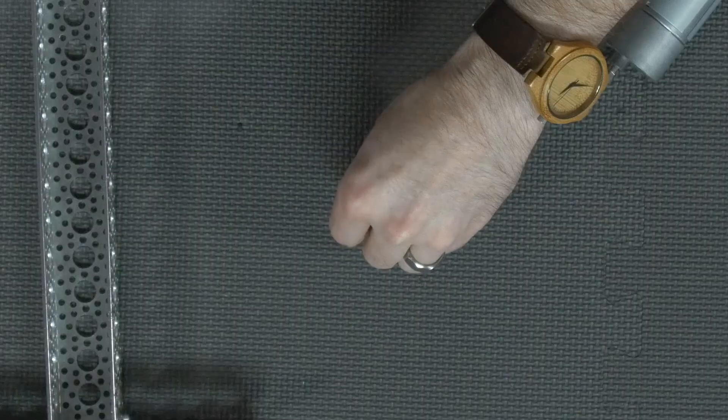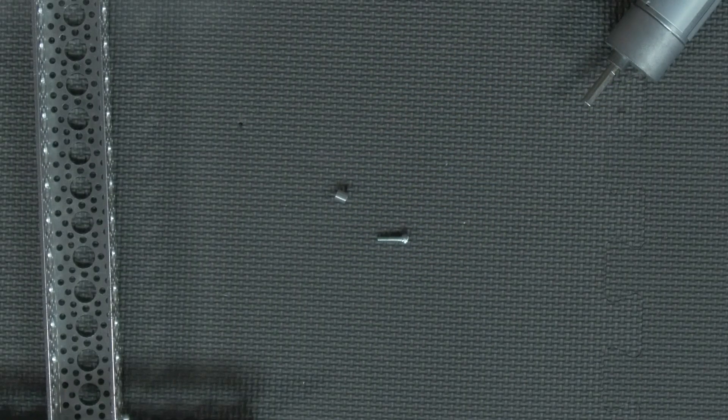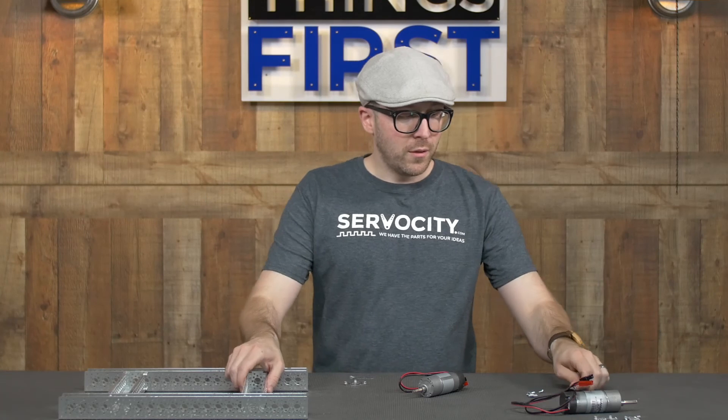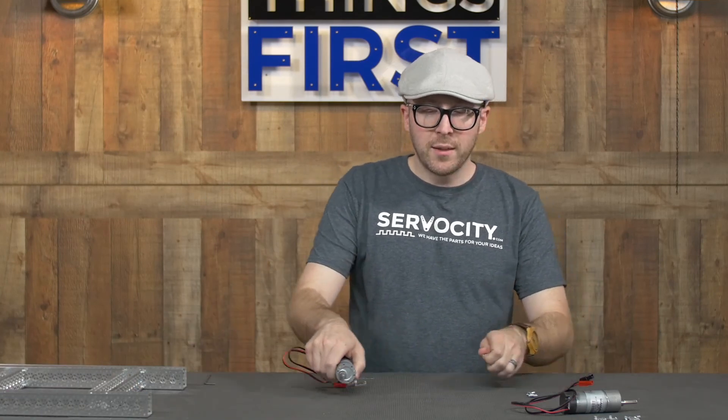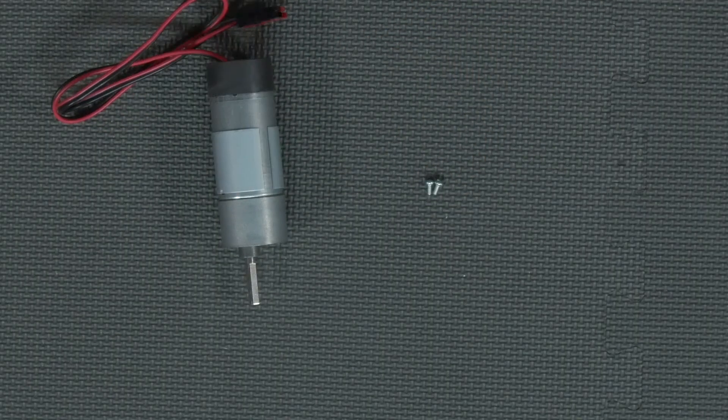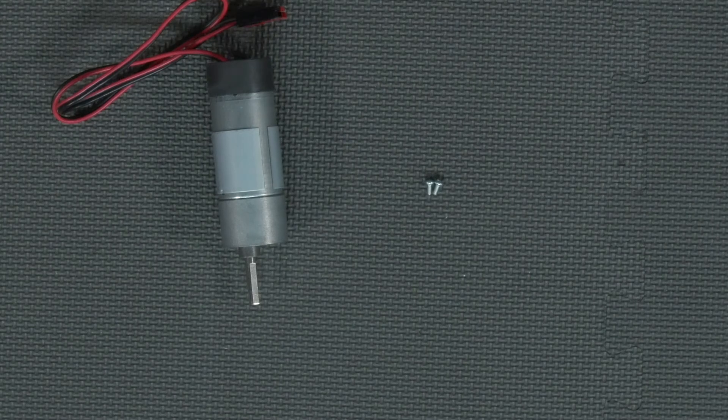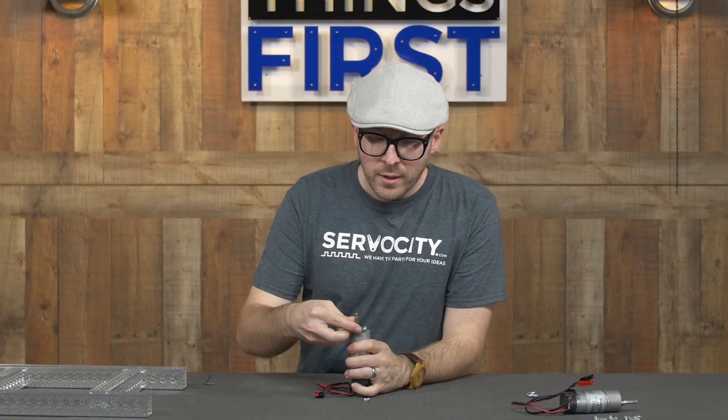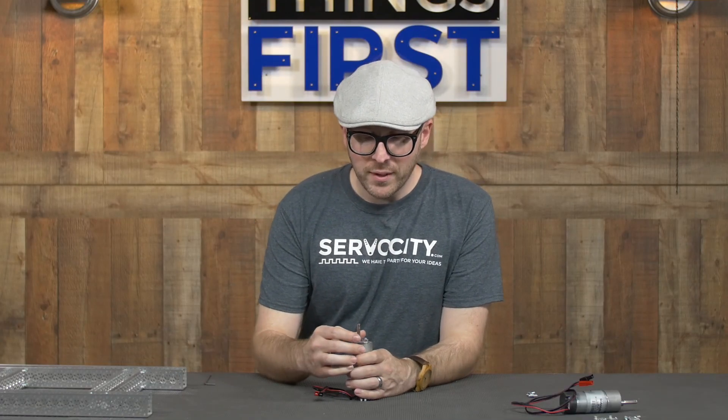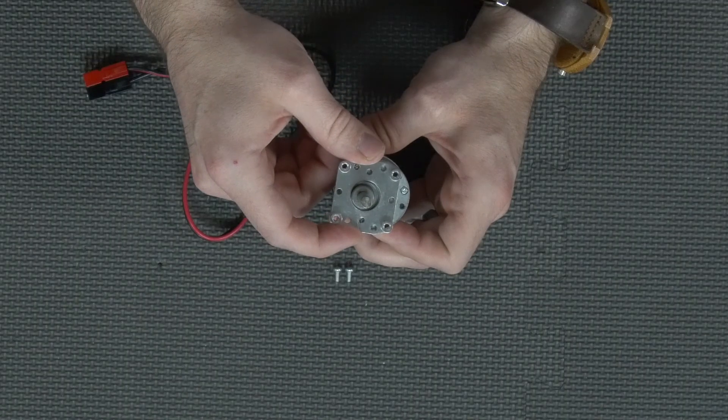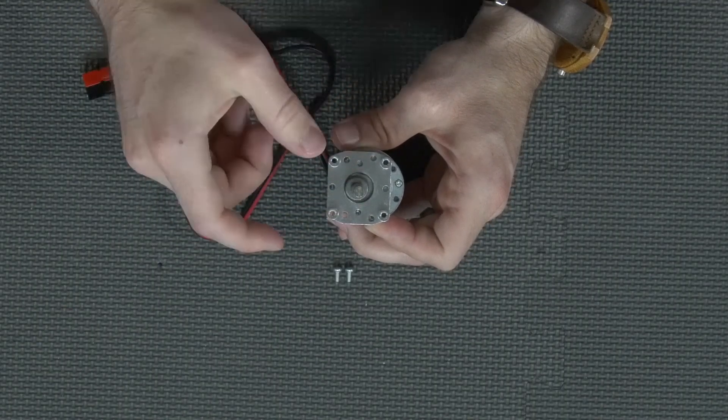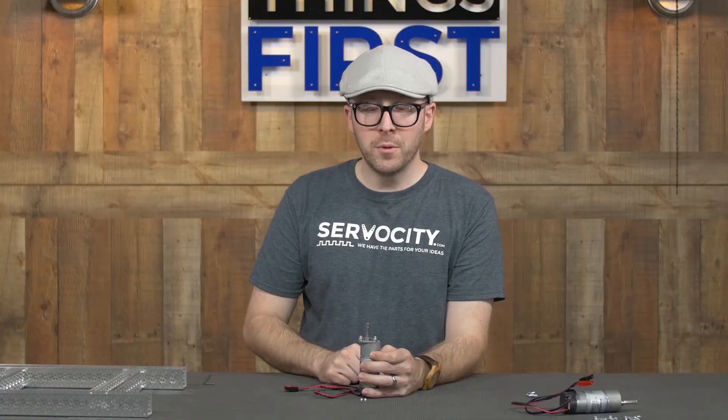The first step is to take the M3 screws that come with your motor mount, put it on the face of your motor, and rotate it around until the holes line up with the tapped holes on the face of the motor.